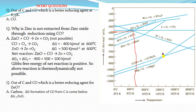Without calculation, by looking directly at the diagram: the CO to CO2 line has a less negative delta G value, while the Zn to ZnO line is more negative. So the possibility of CO to CO2 is less compared to Zn to ZnO, meaning CO cannot reduce ZnO.